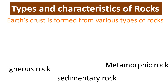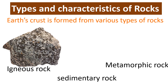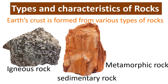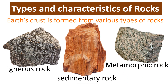Earth's crust is formed from various types of rocks, which differ in colour, structure, texture and the way it is formed. Generally, the rocks can be categorised into three groups, namely igneous rocks, sedimentary rocks and metamorphic rocks. Each type of rock forms differently and takes thousands of years to form.